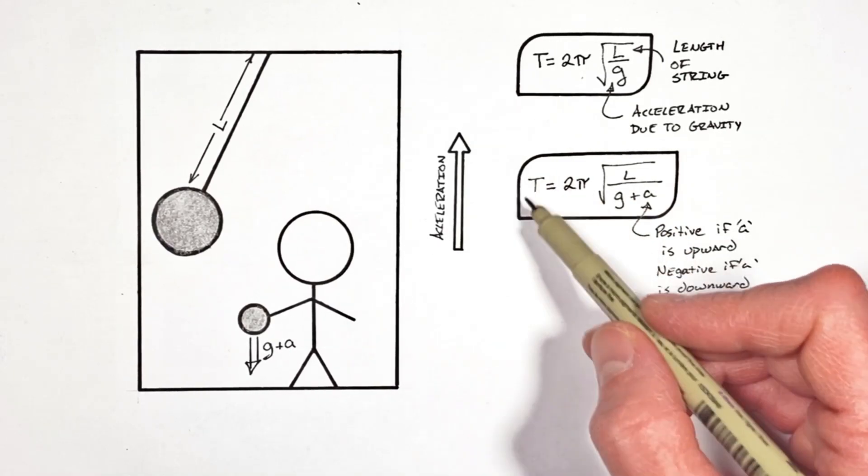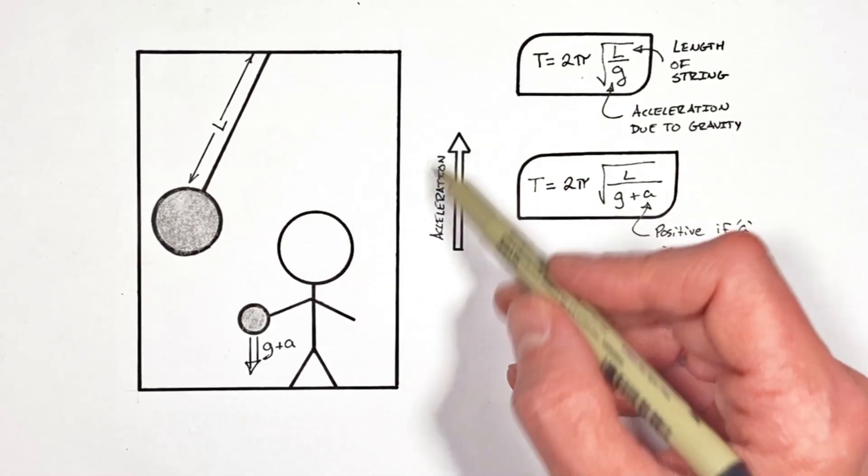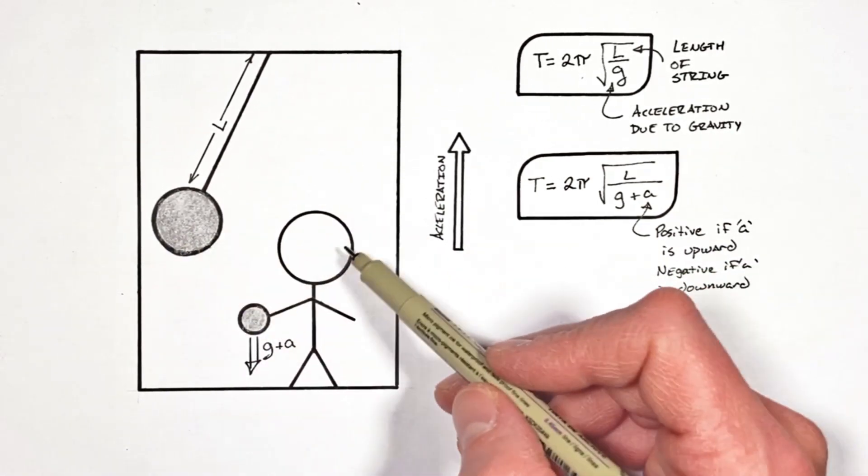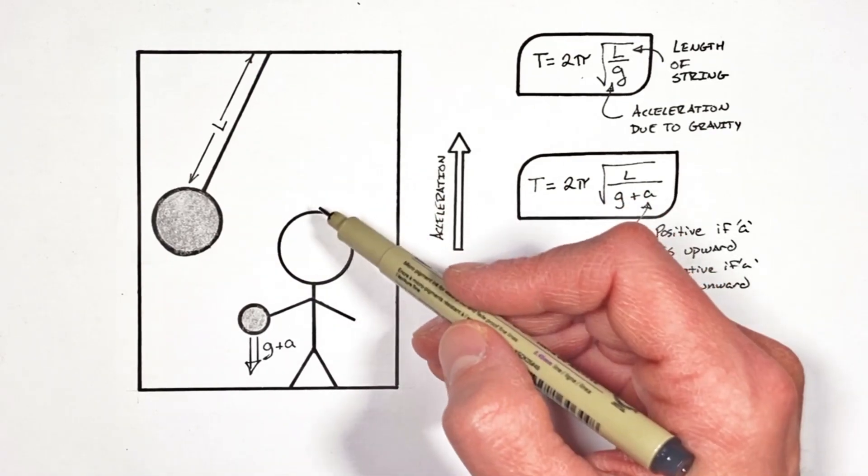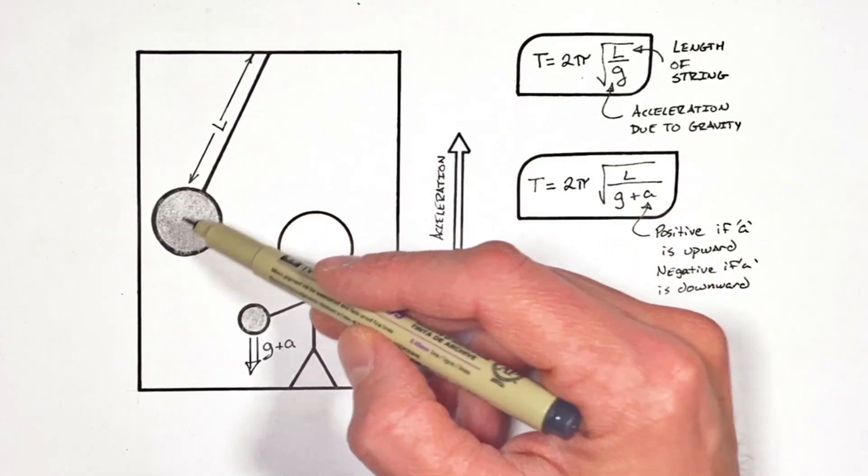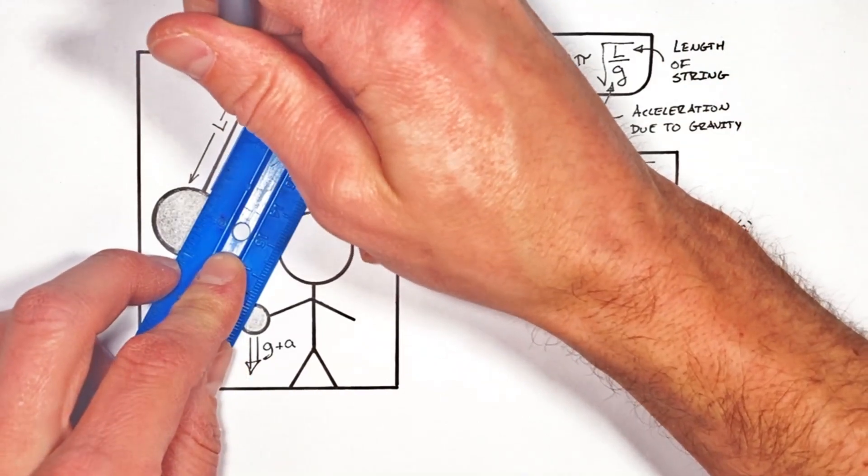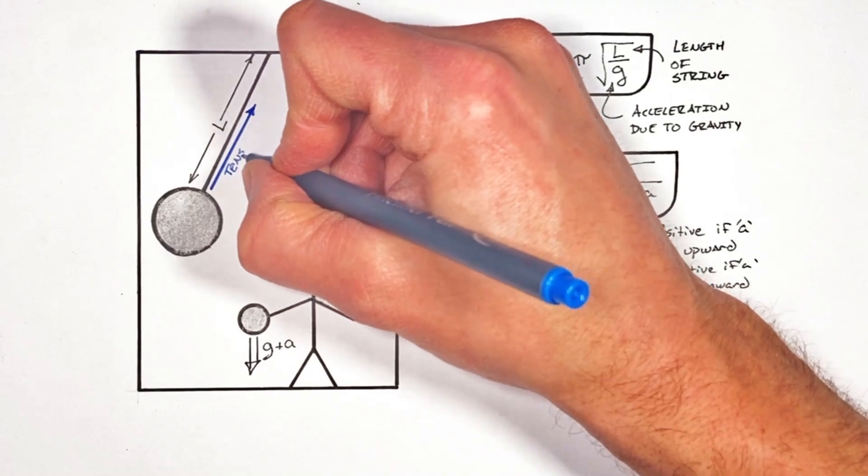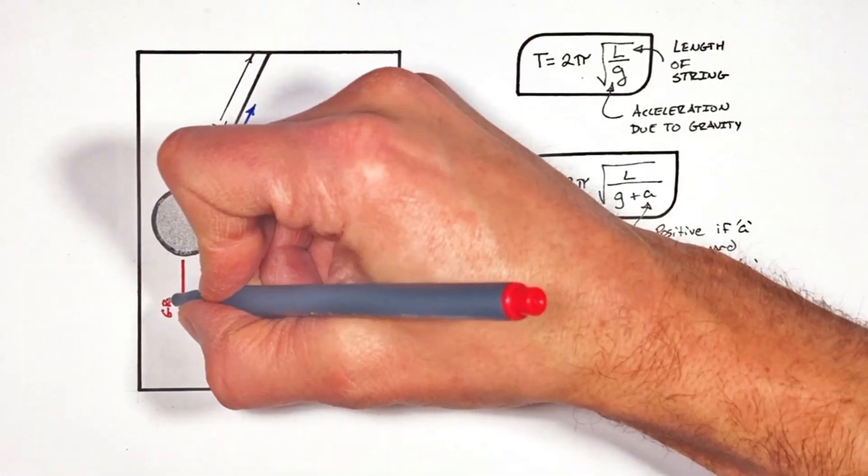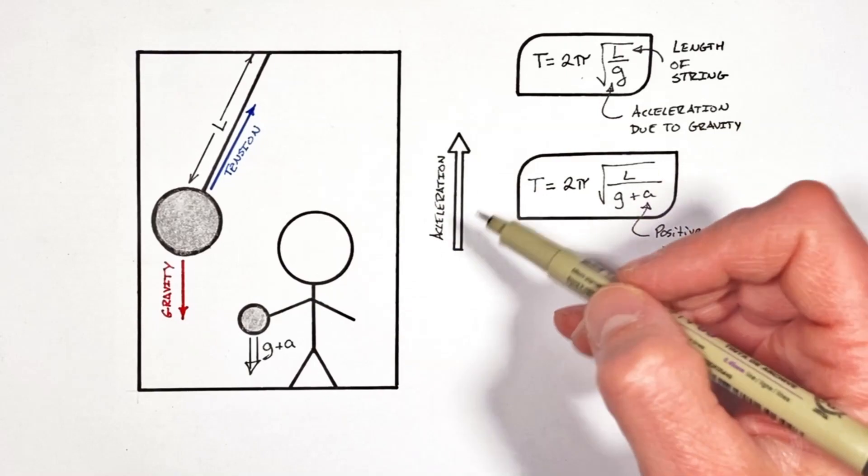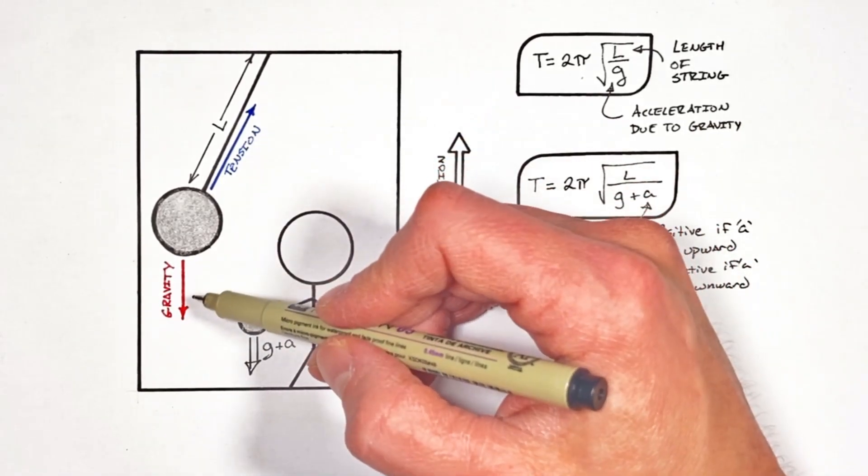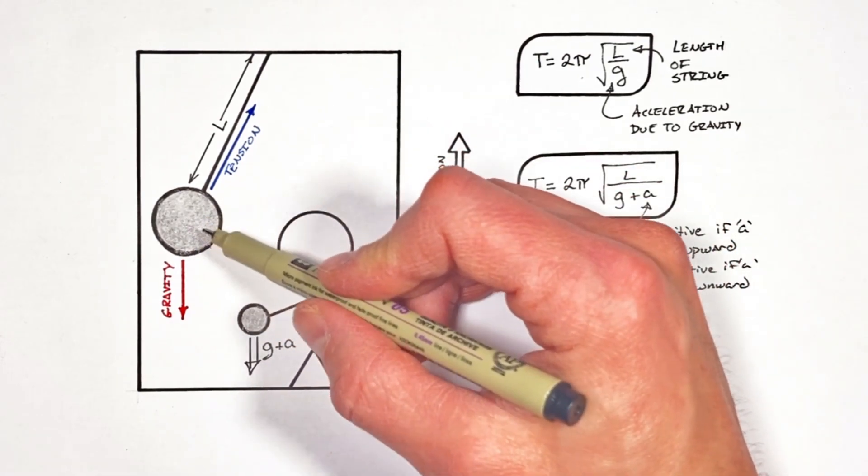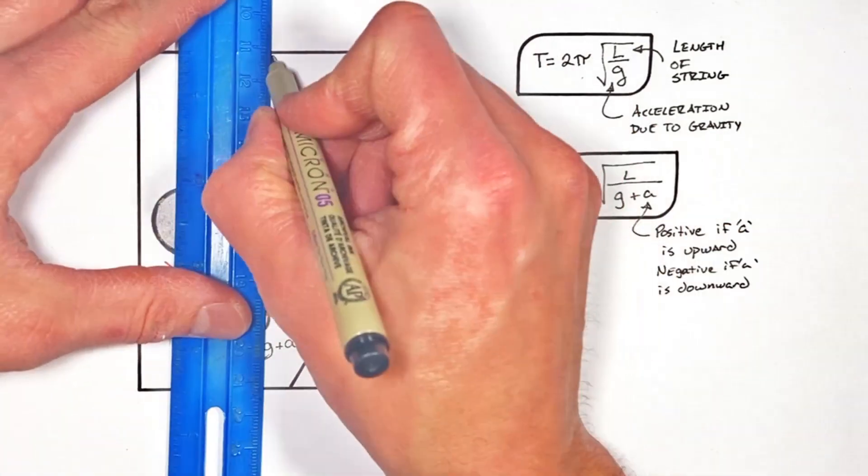Now, this equation tells us about the period of the pendulum inside our accelerating elevator, but it doesn't really tell us why this pendulum goes back and forth faster or slower. Now, to understand that, I want to turn to a free body diagram showing all the forces acting on this pendulum. You see, there's two forces acting on this pendulum, the first being the tension in the string, and the second being gravity. Now, if our elevator isn't accelerating, vertically these two forces cancel each other out, and it's the horizontal component of tension that causes this pendulum to swing back towards what we call equilibrium.